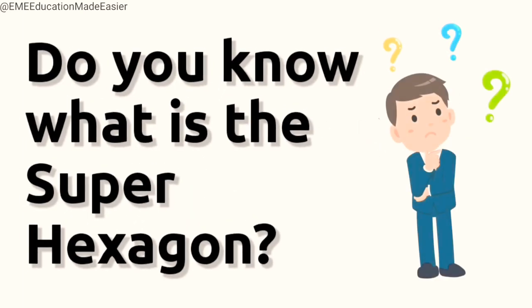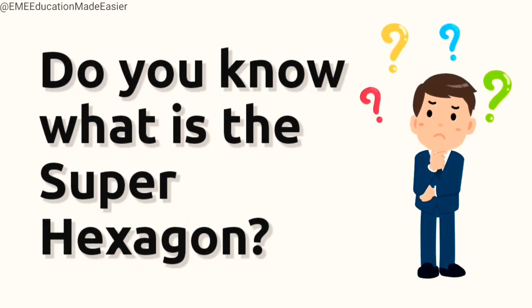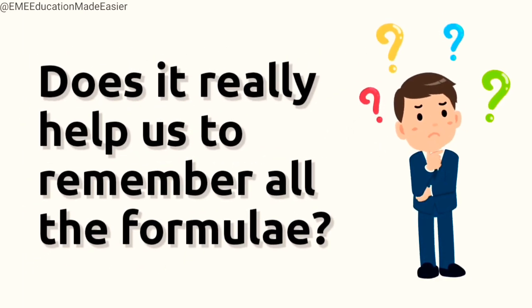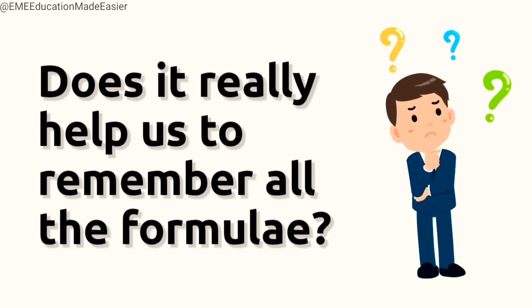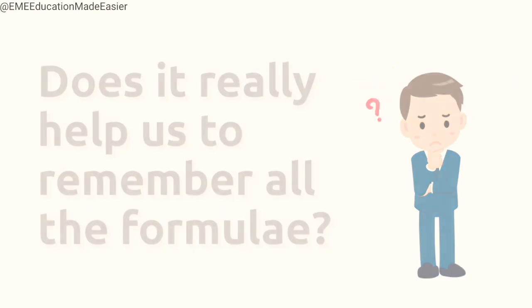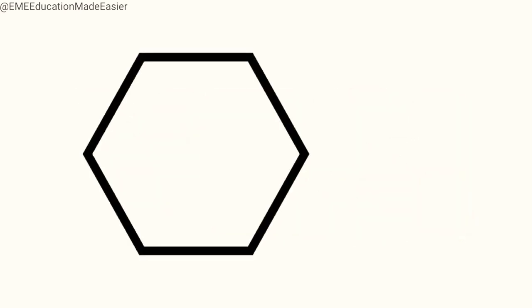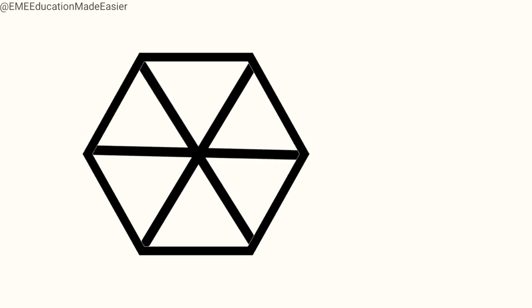Hello students! Do you know what is the superhexagon? Does it really help us to remember all the trigonometric formulae and identities we have seen so far? Yes, it does. It's a symbol hexagon which looks like this. All we need to do is to join all the opposite vertices and that gives us three diagonals. We write the number one in the center.